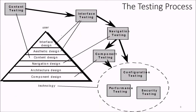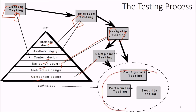The testing process for web apps follows a certain order. We know how the web app has been designed — components, architecture, navigation, content, aesthetics, and interface. So we first check content design, then interface design, then navigation testing, then component testing. And in component navigation we also look for configuration testing, performance testing, and security testing.